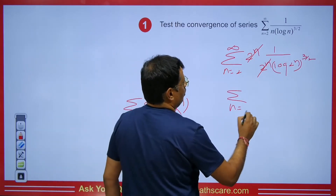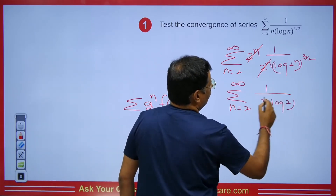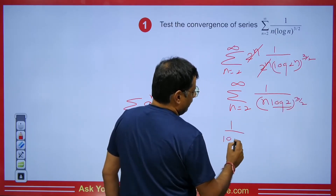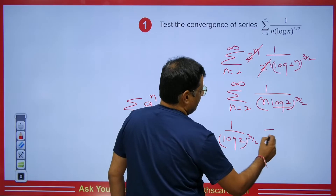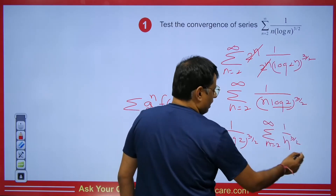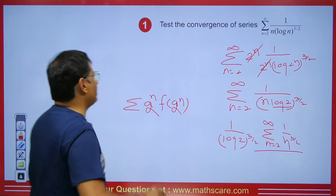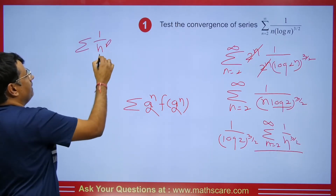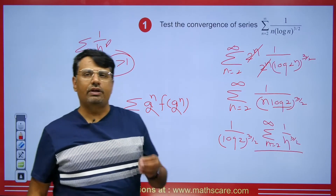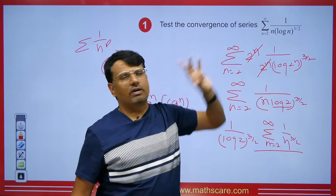Taking n in front, it becomes 1 upon (n log 2) to the power 3/2. Taking out (log 2)^(3/2), which is a constant, the summation depends only on n. So it reduces to 1 upon n^(3/2). By the p-series test — summation 1/n^p — since p = 3/2 is greater than 1, this series is convergent. And if this condensed series is convergent, then the original series is also convergent.